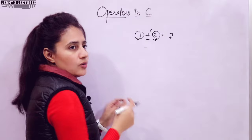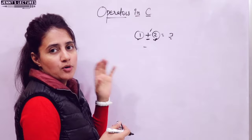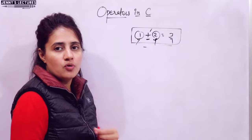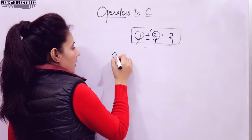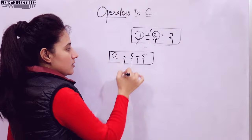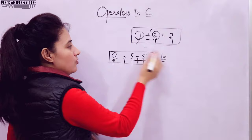Operators are basically used to manipulate variables or data in C language. With the help of operators and operands, an expression is formed. An expression is a sequence of operators and operands which gives a single value after processing. For example, A = 5 + 5 is an expression. Here 5 and 5 are operands, plus and equal-to are operators, A is a variable, and after processing it gives the single value 10, which is assigned to A.